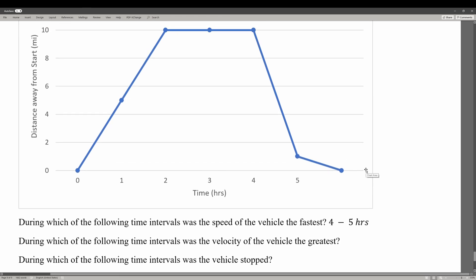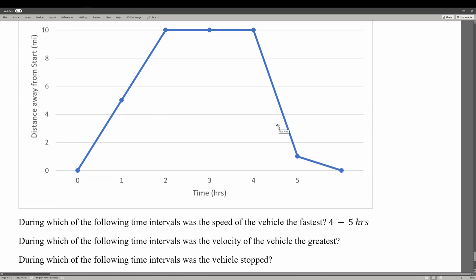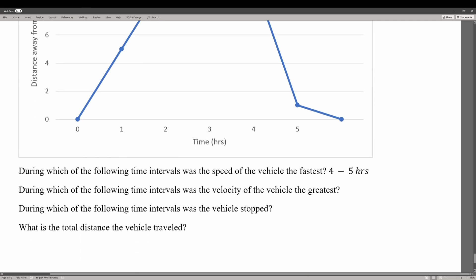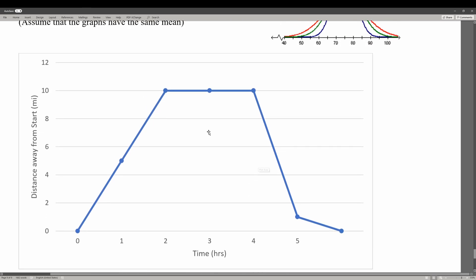Then we have to look for velocity. Velocity equals speed plus direction. That's why I chose 4 to 5 as the greatest speed, because speed doesn't consider direction, but velocity does. In order to find the greatest velocity, it needs to be heading in a positive direction and has to have the greatest magnitude. Here, negative 9, negative 1, 0, and 5. Between 0 to 2 hours, the velocity of the vehicle is greatest. And the vehicle was stopped between 2 to 4 hours, because the distance did not change.